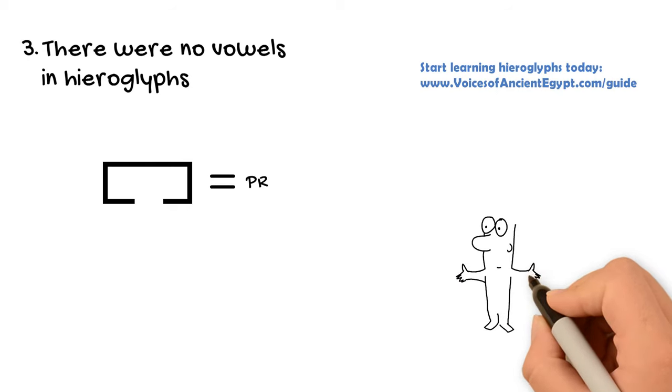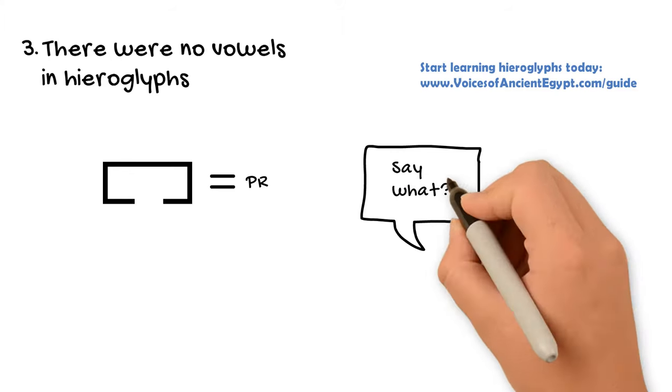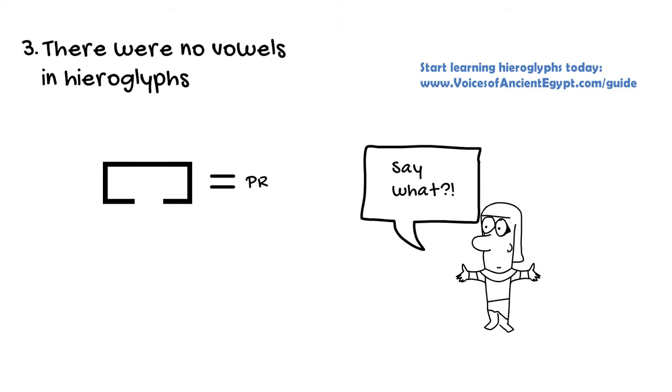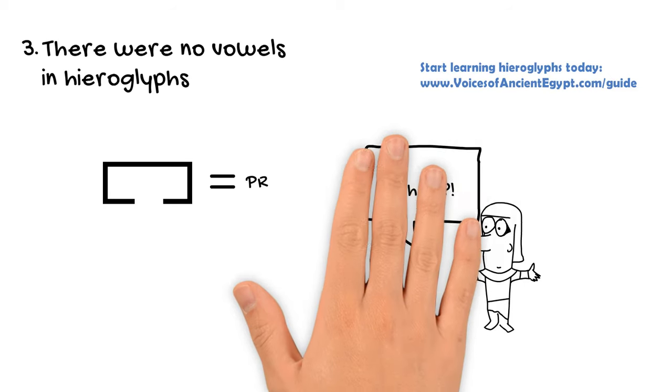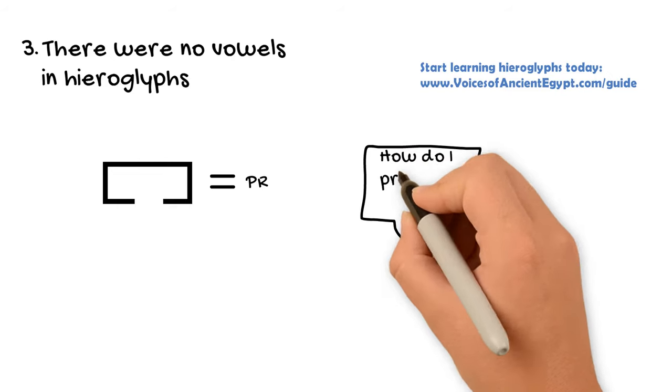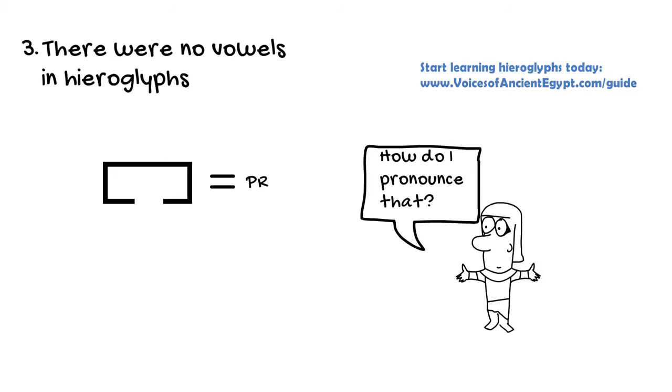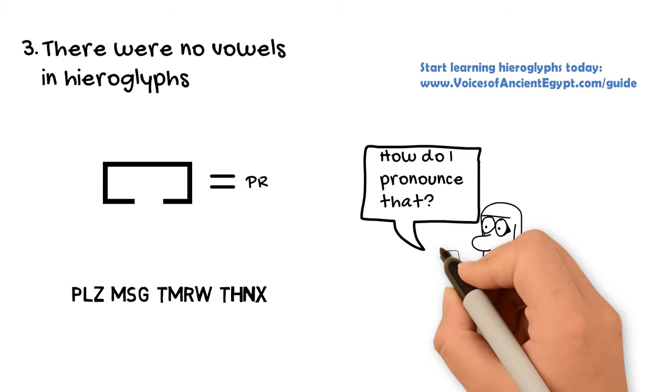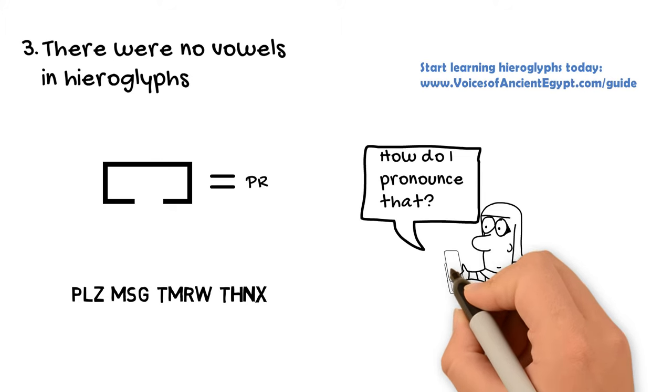And this may seem very strange at first, particularly to those of you who are maybe used to European languages and their writing systems, or who are used to writing systems that are syllabic, that have whole syllables. But it's actually pretty common in other languages, such as those in the Semitic language family like Arabic and Hebrew. And even in English, you can probably figure out what this sentence right here means when it doesn't have the vowels, especially if you're a native speaker again.